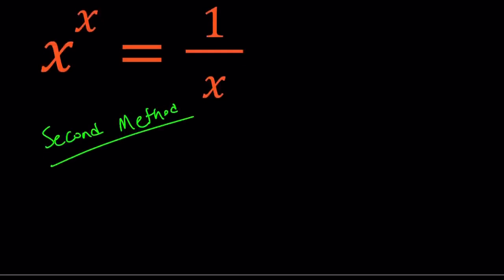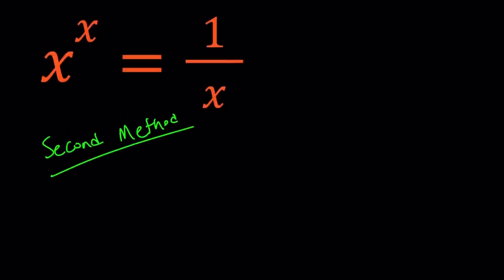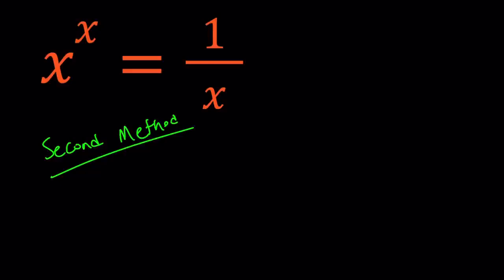So for my second method, I'm going to do the following. First of all, I have x to the power x equals 1 over x. I'm going to cross multiply. So this gives us x to the power x times x equals 1. Now x is the same thing as x to the power 1. So from here, if you add the exponents, you get x to the power x plus 1 equals 1.